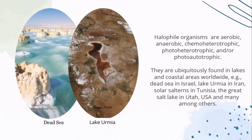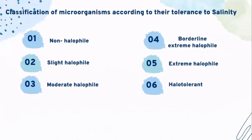Due to their diversity, different classification schemes have been suggested to describe these microorganisms. They are classified according to their tolerance to salinity. The categories are: non-halophile, slight halophile, moderate halophile, borderline extreme halophile, extreme halophile, and halotolerant.